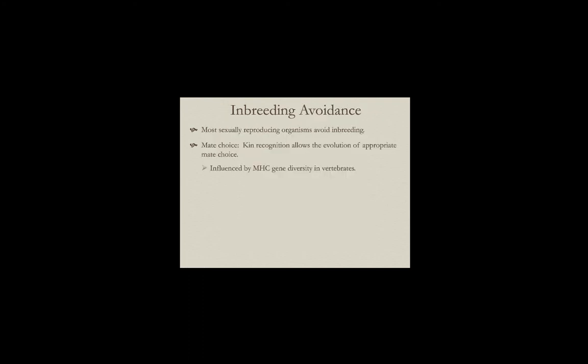Most sexually reproducing organisms do avoid inbreeding. How do they do this? Often it's associated with mate choice — if you can recognize your kin, it allows you to select a more appropriate mate with greater genetic consequences for your offspring. In vertebrates, there's some indication that mate choice can be influenced by major histocompatibility (MHC) gene diversity. MHC genes are associated with the immune system, and the more diverse your MHC genetic background, the better you are at fighting off infections.